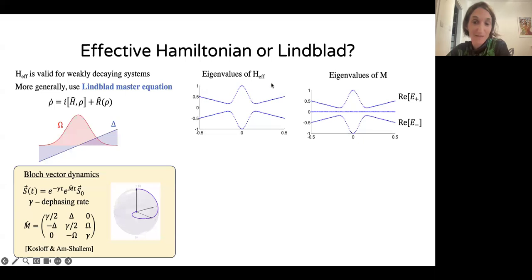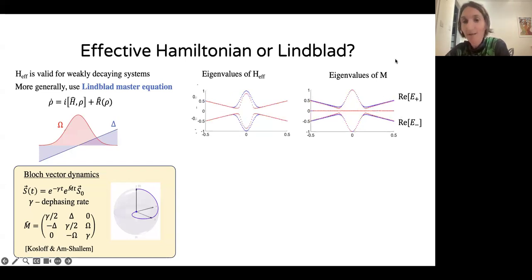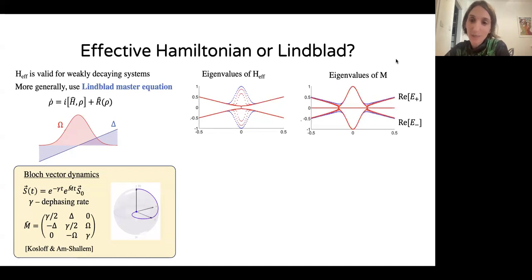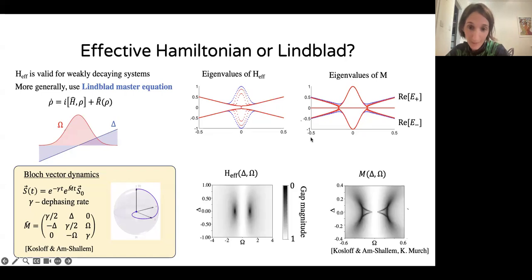With that description in mind, we can ask, what are the eigenvalues of the effective Hamiltonian and of the Bloch operator? And do they behave basically the same? So what we plot here, the effective Hamiltonian is a two-by-two matrix. We have two eigenstates. The Bloch vector has three eigenstates. So this line here is the steady state. Now let's see what happens when we introduce decay. The blue line corresponds to no decay, but now let's introduce decay and see what happens. Once again, we see that also in the Bloch vector description, the gap closes. But very interestingly, it closes at a different point.